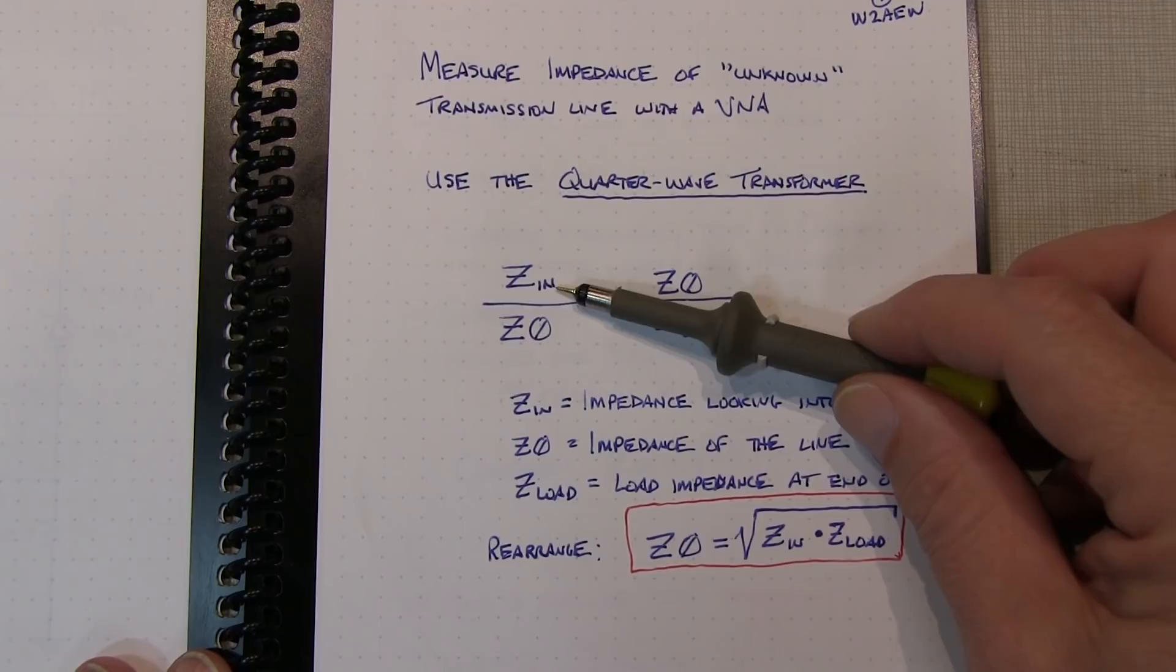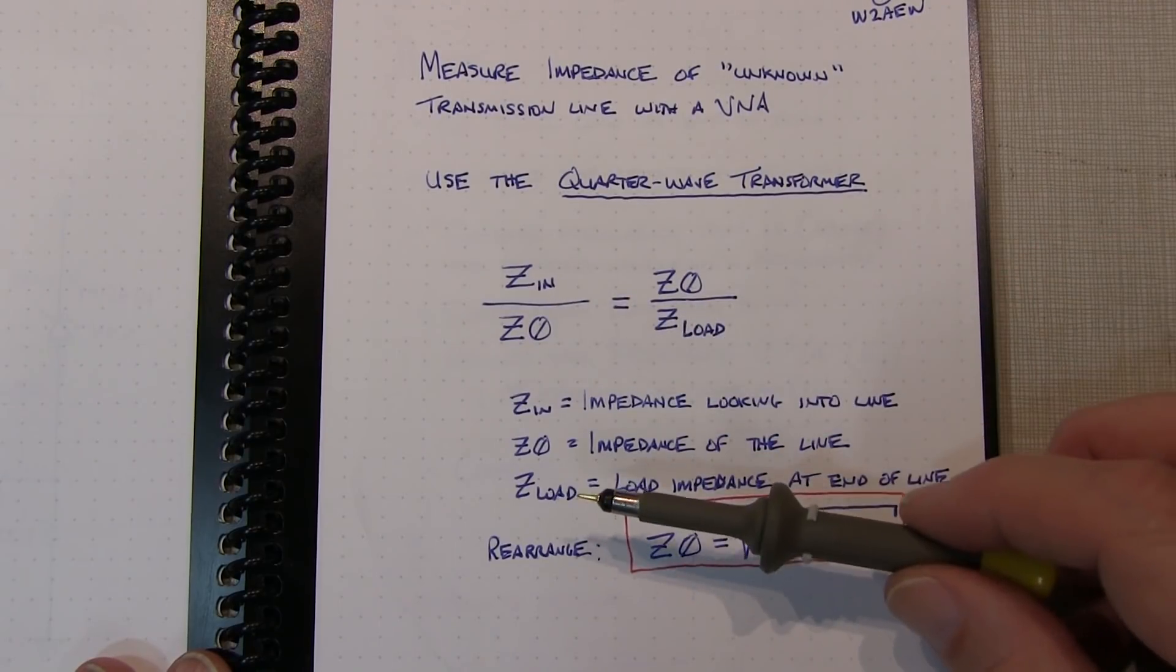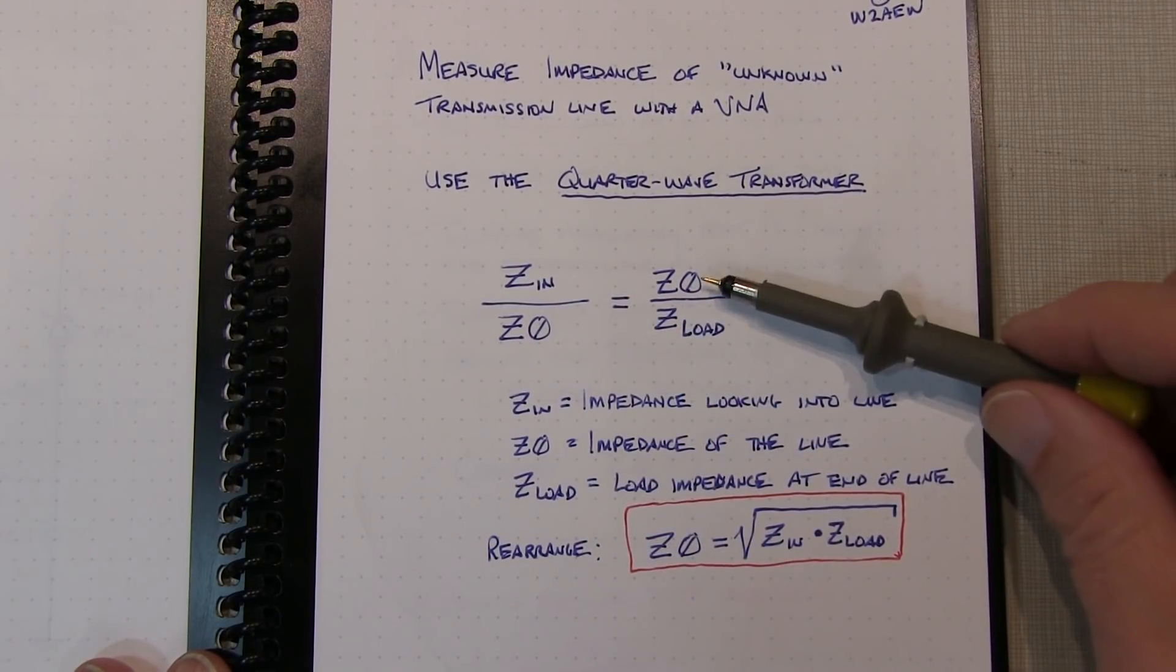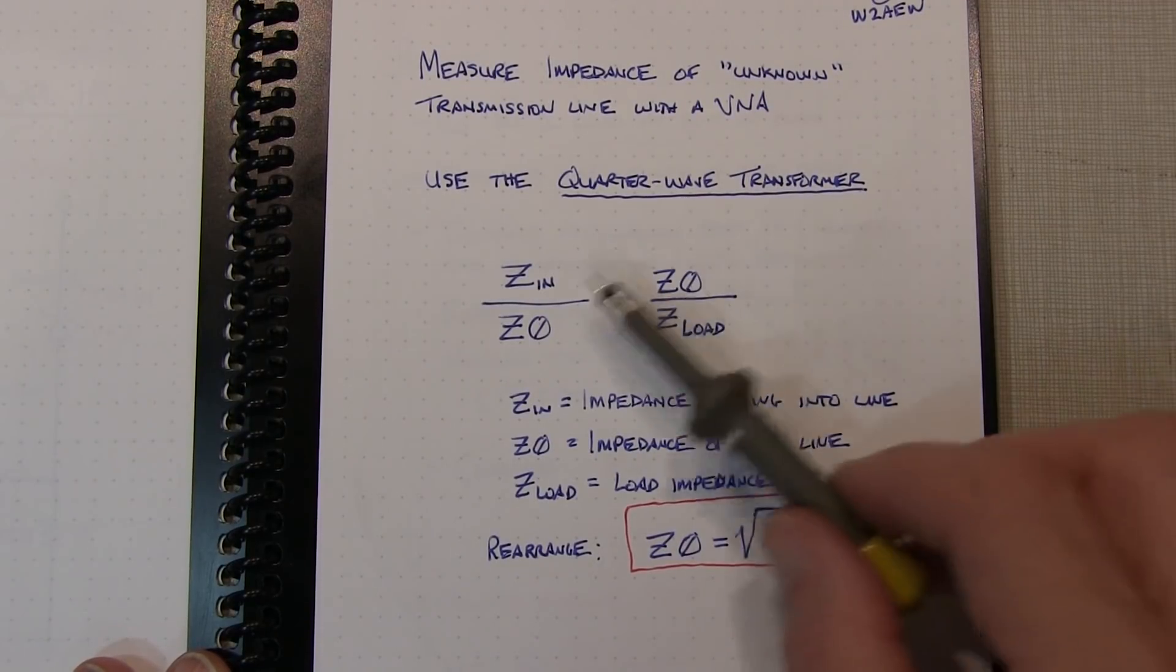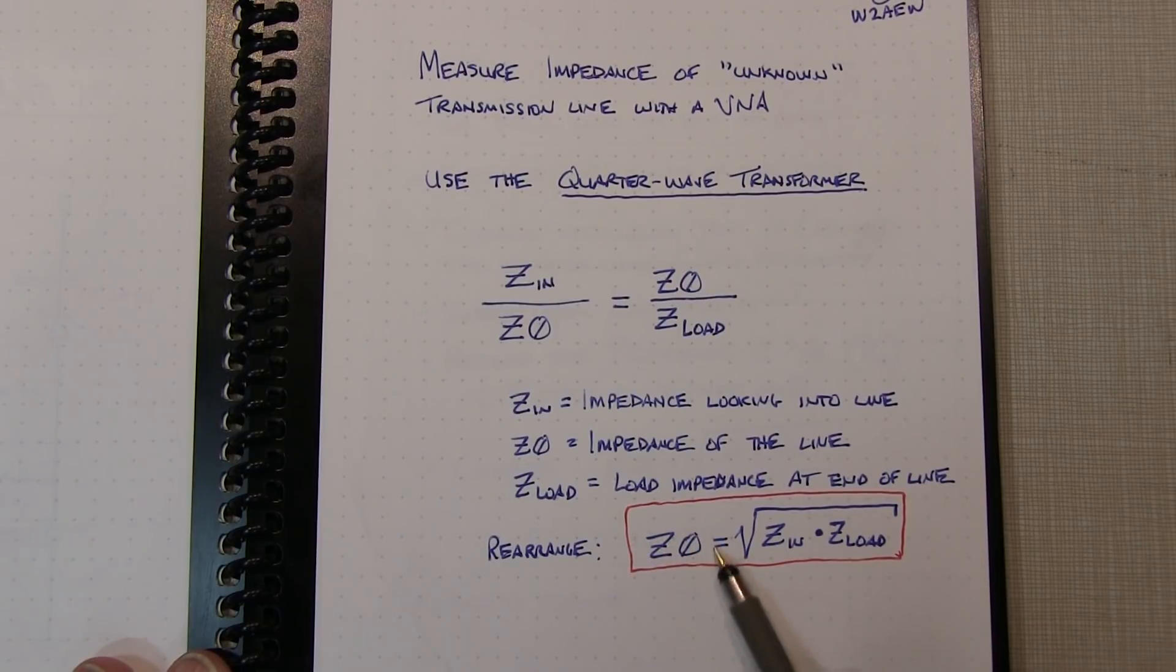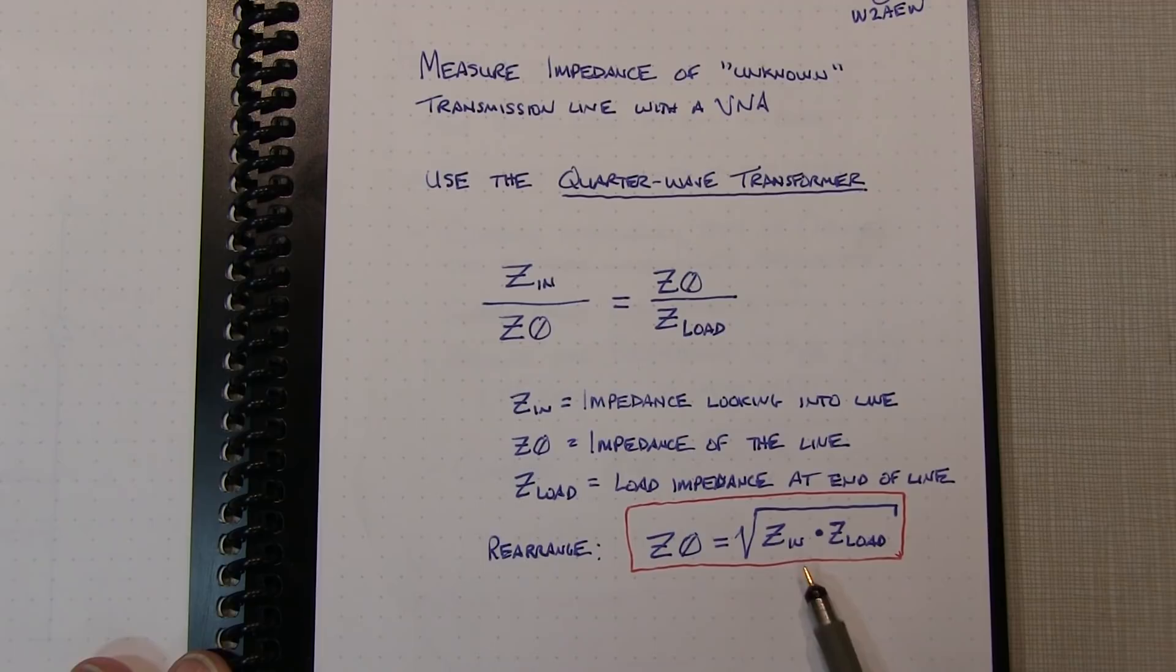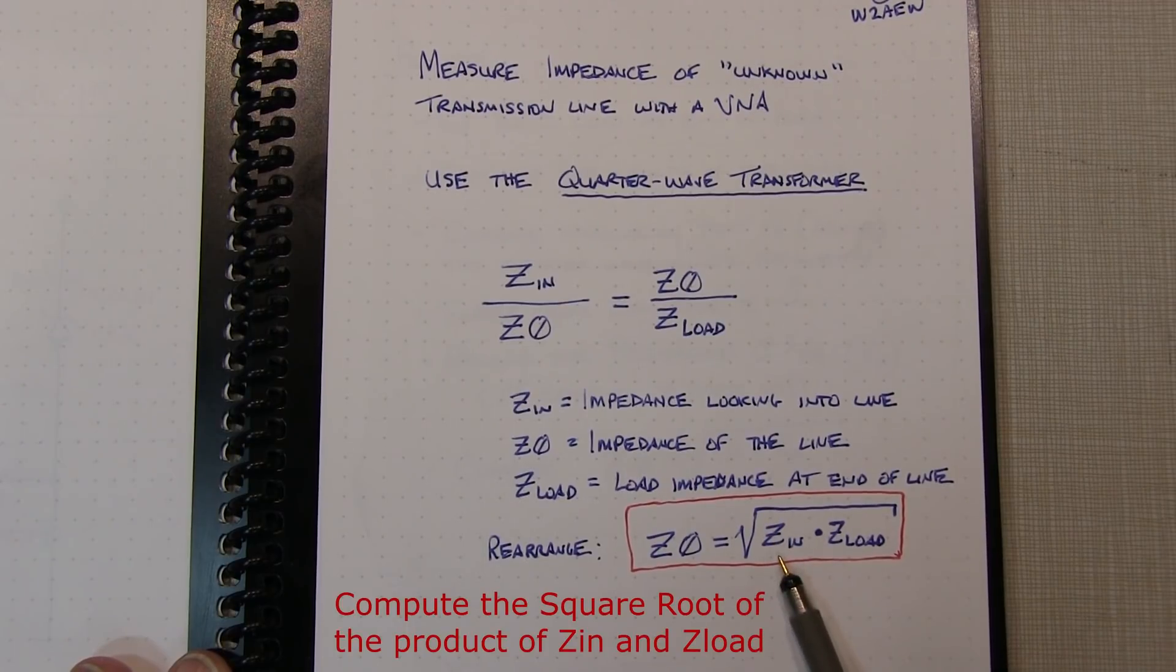So the impedance looking into the line divided by the line impedance is equal to the line impedance divided by the load impedance. So what we can do is rearrange that equation and be able to compute for the characteristic impedance of the line by simply taking the product of the measured input impedance at the quarter-wavelength point multiplied by the load.